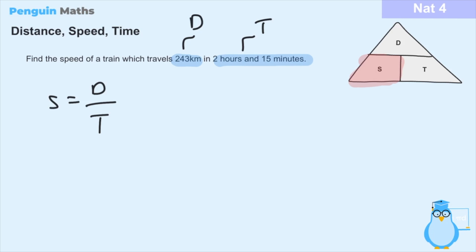To get the units for speed, we use a combination of the distance and time units. Since we can't have kilometers per hour-and-minute, we have to choose one. For a train it's more common to use kilometers per hour, so we need to convert the time from hours and minutes into just hours. Our time is 2 hours plus 15 minutes, and we need to convert the 15 minutes into a fraction of an hour.